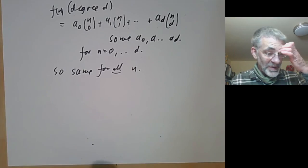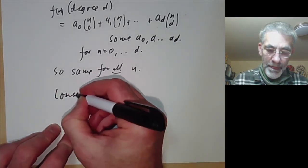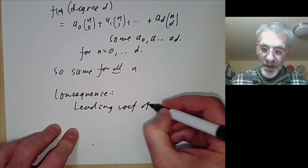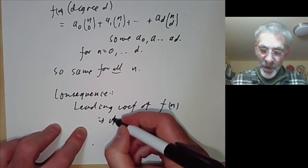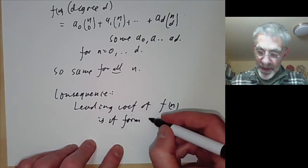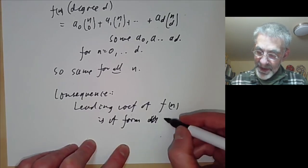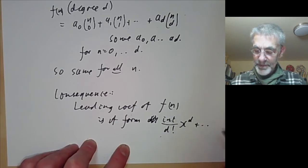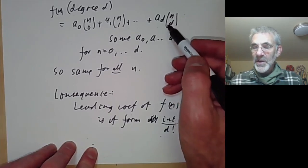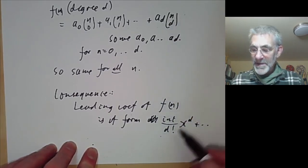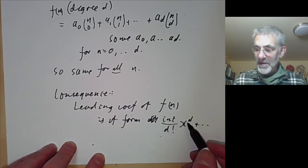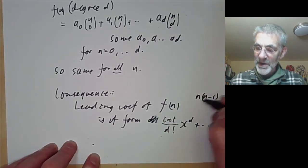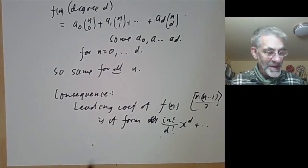There's a simple consequence of this: the leading coefficient of f(n) is of the form (some integer) / d! times n^d, because the leading coefficient of C(n,d) is 1/d!. Of course the leading coefficient need not be an integer itself — as we saw in the example n(n−1)/2 — however it is an integer when multiplied by d!.